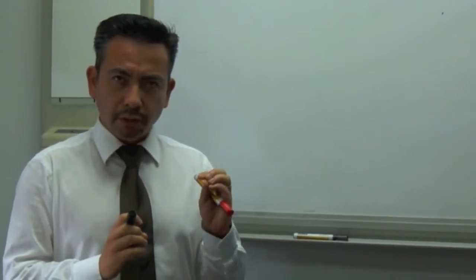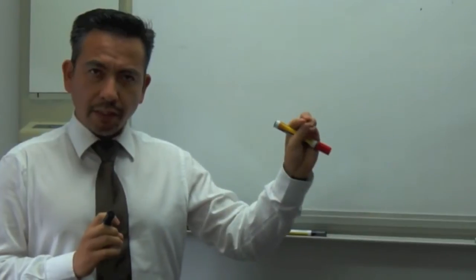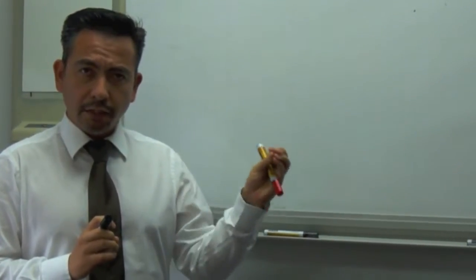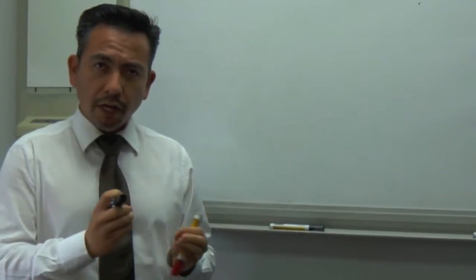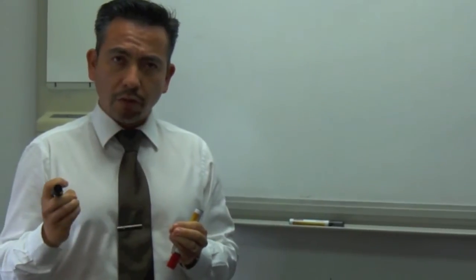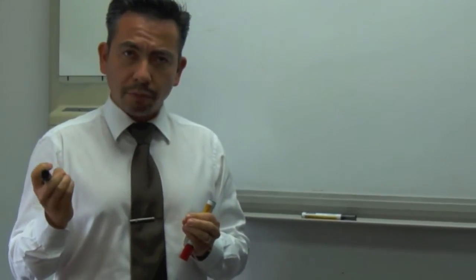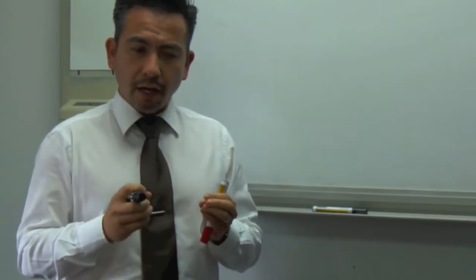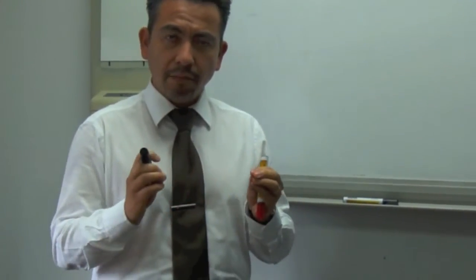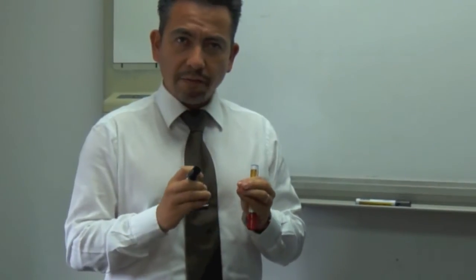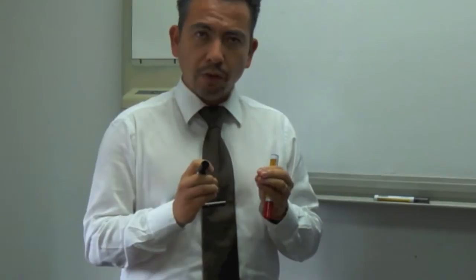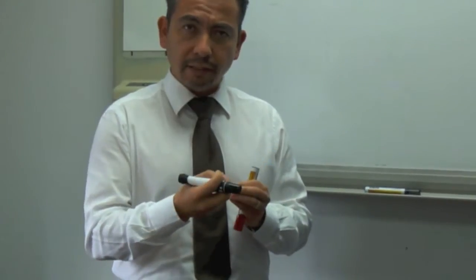So we will compare the cryptosystem from the RSA, which is based on the integer factorization problem, and we will compare it with the elliptic curve cryptosystem, public key. As an end result, or as an outcome, we believe that elliptic curve cryptography offers a better security against ciphertext attacks.